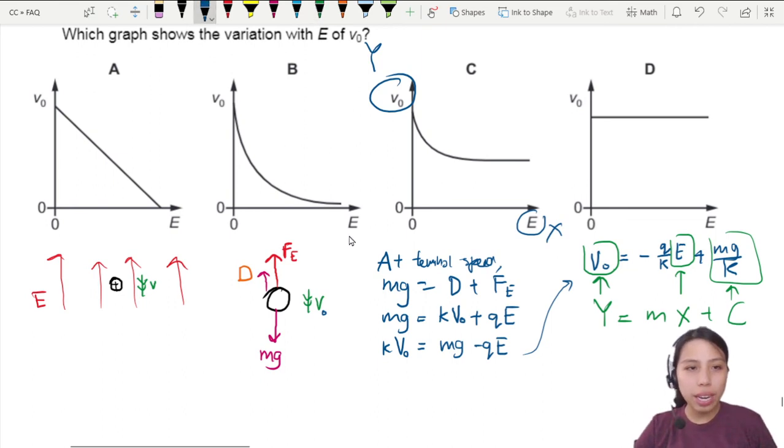So from here we can see, okay, confirm it's going to be a straight line starting at some intercept. So straight line, that means C and D are out. Probably negative gradient, yep, negative q over k. Intercept mg over k. That's how I know for sure that A is the answer for this question.